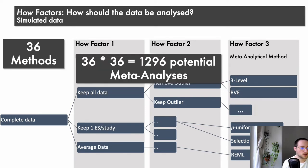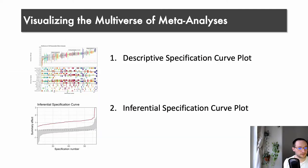And in total, when we multiply our which factors with our how factors, we have a lot of potential meta-analyses that could be run. And now, of course, it is important what are we going to do when we have so much information and so many meta-analyses. Then we have to visualize them. And to do this, we can either use descriptive specification curve plots or inferential specification curve plots. Let's have a closer look.